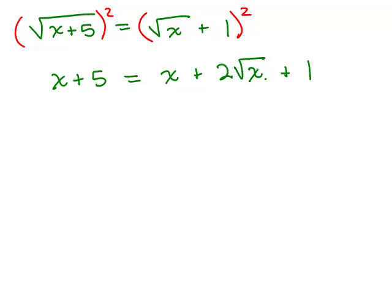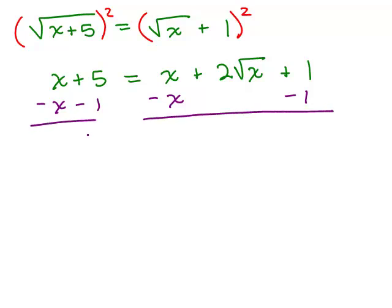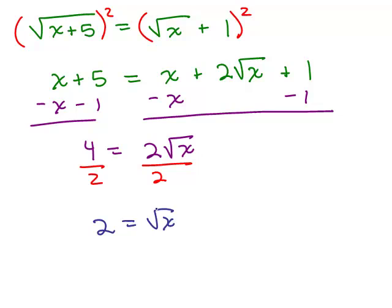Since there's still a square root, we need to isolate it. We subtract x and subtract 1 from both sides, giving us 4 equals 2 square roots of x. Dividing by 2 gives us 2 equals square root of x. Now the square root of x is isolated, so we square both sides again, and we get x equals 4.